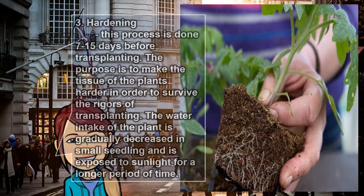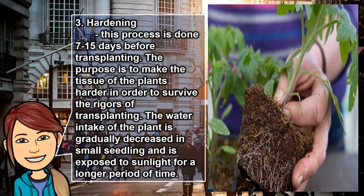3. Hardening: this process is done 7 to 15 days before transplanting. The purpose is to make the tissue of the plants harder in order to survive the rigors of transplanting. The water intake of the plant is gradually decreased and the seedling is exposed to sunlight for a longer period of time.